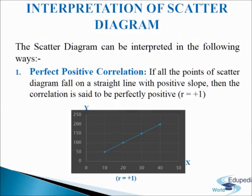Now we come to interpreting the scatter diagram. By observing the pattern of dots, we can know the presence or absence of correlation and the type of correlation. The scatter diagram can be interpreted in the following ways. First is perfect positive correlation: if all points of the scatter diagram fall on a straight line with a positive slope, then the correlation is said to be perfectly positive, that is r = +1.